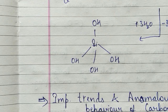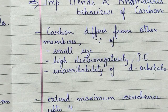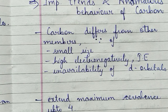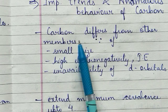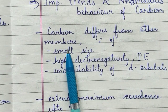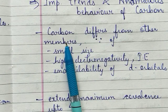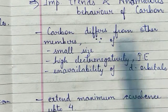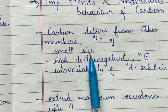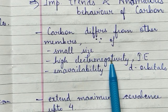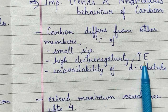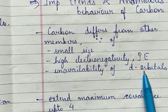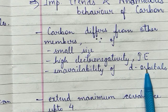Regarding the anomalous behavior of carbon: since carbon is the first member, its size is small, electronegativity and ionization energy values are very high, and d-orbitals are unavailable. These factors make carbon behave differently from the rest of its family members.